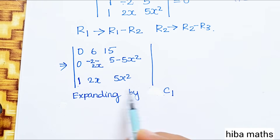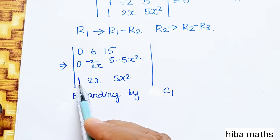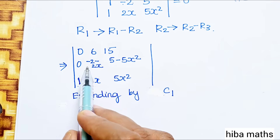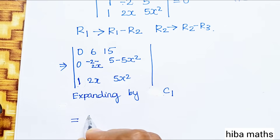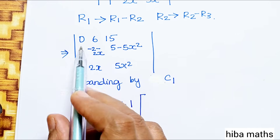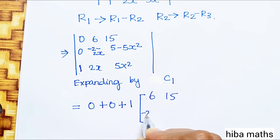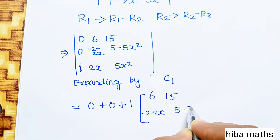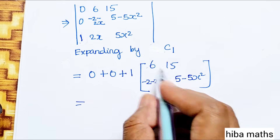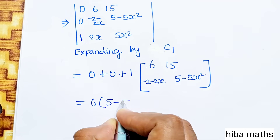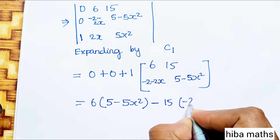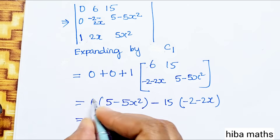Expand along column 1. Both first entries of the new R1 and R2 are 0, so only the R3 entry (which is 1) contributes. That gives 1 into the 2×2 minor: rows with entries 6, 15 and −2−2x, 5−5x².